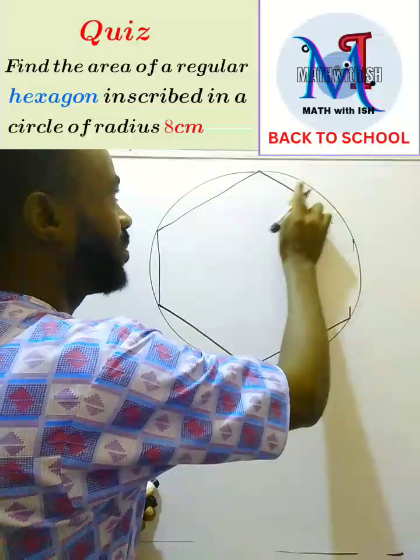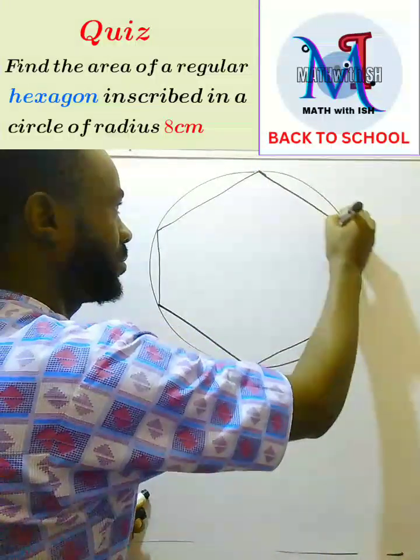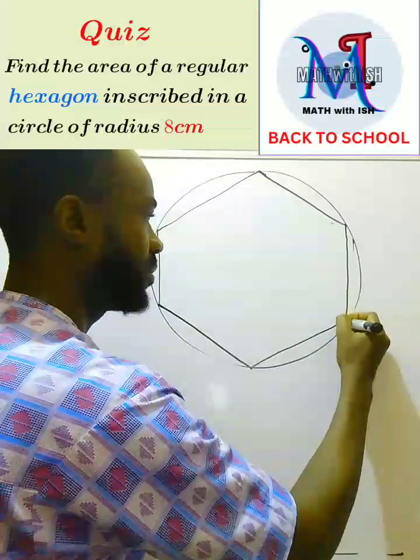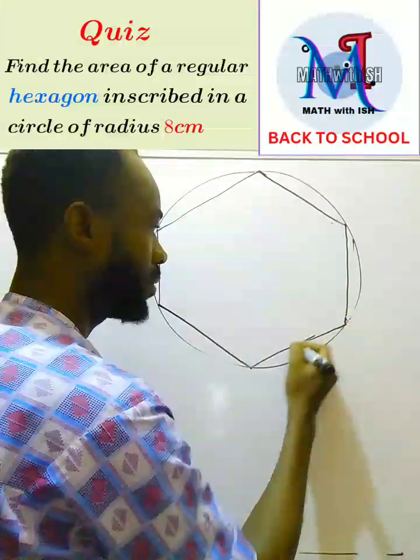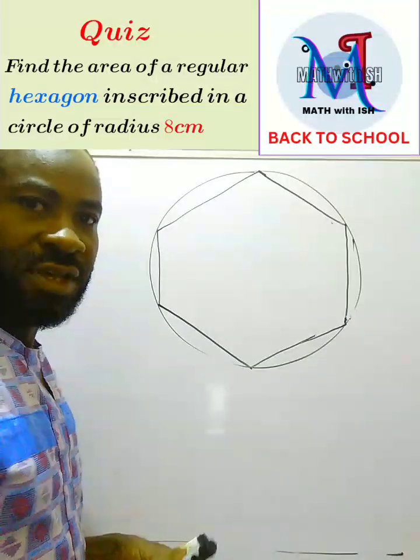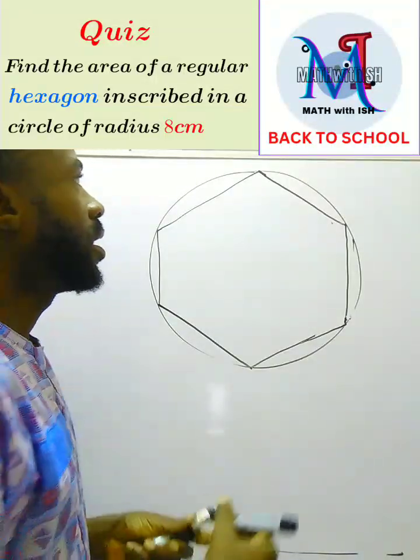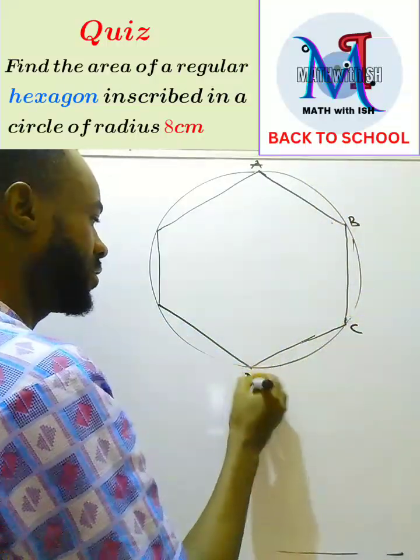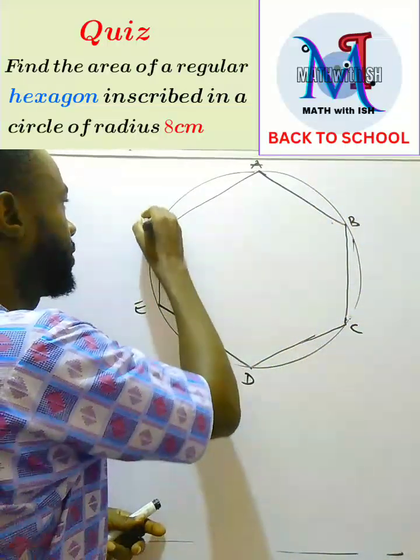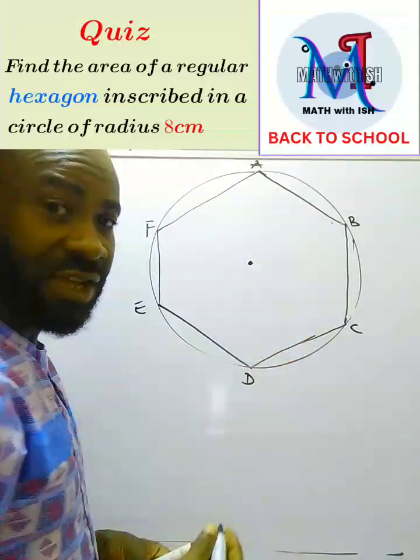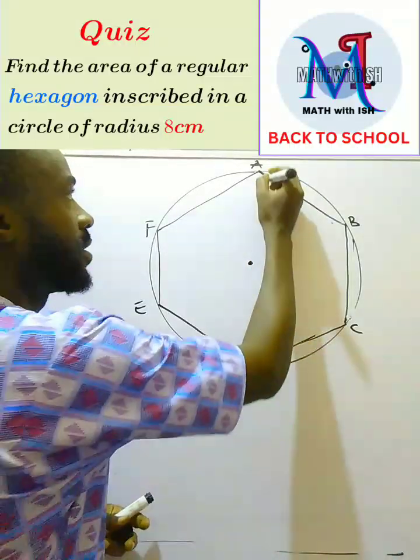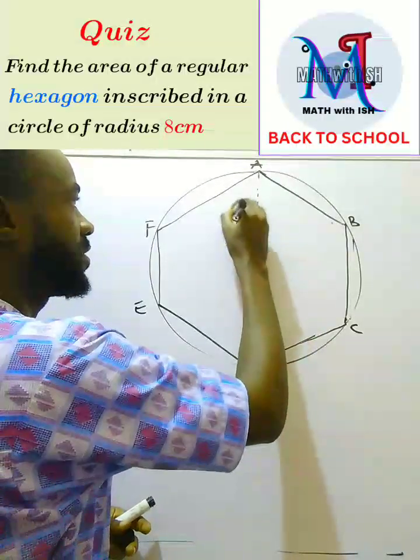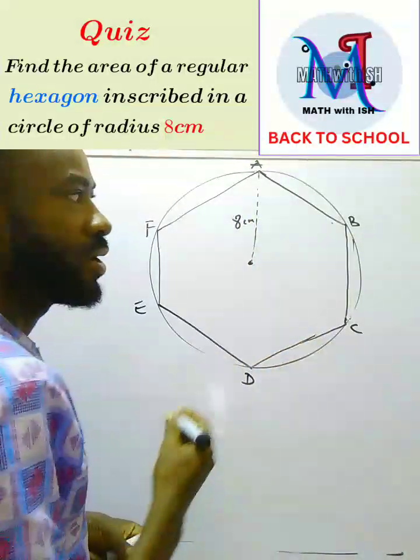I'll just try to give a diagram. The diagram is not perfect, just bear with me. I'm not an artist. So this is the hexagon. Now if I call each of the points A, B, C, D, E, F and this is the center of the circle, then they give us the radius of the circle as 8 cm.